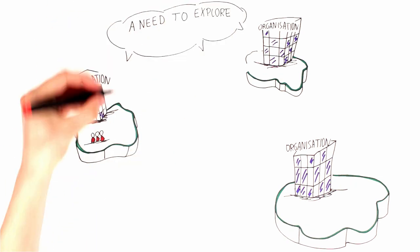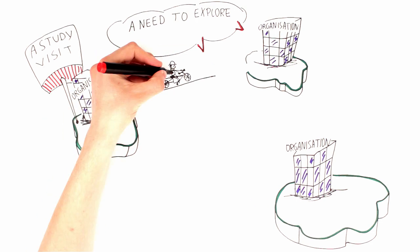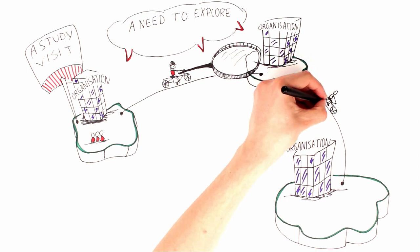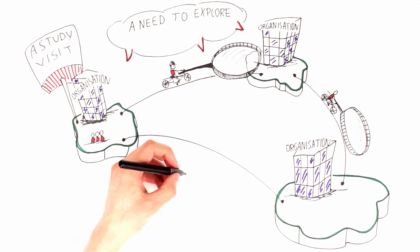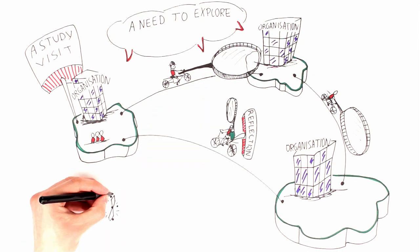For example, it could be a study visit focusing on street work, or it could be one focusing on social inclusion practices in youth work. A study visit would include trips to various organizations, as well as sessions to reflect on what has been learned, how to apply this to the participant's organization. Such an activity would usually last up to one week.